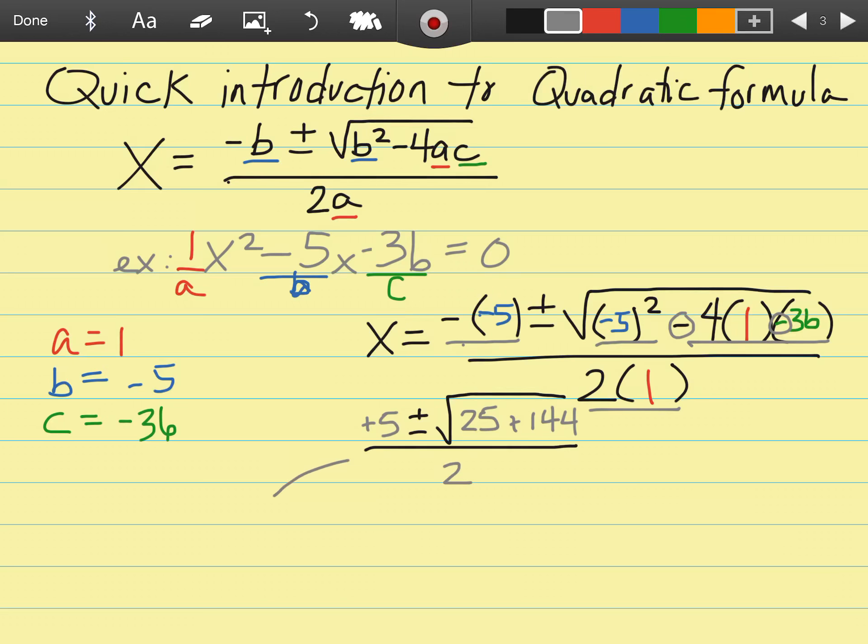I'm going to come down this way and work my way back to the right. I have a positive 5 plus or minus the square root, and let's add together 25 and 144. I'll get 169 divided by 2. Then I'm going to reduce again. I still have 5 plus or minus divided by 2, but let's evaluate what is the square root of 169. That is going to be 13, and then I'm just about ready to break this up.